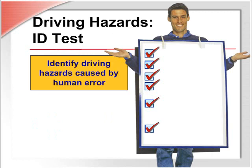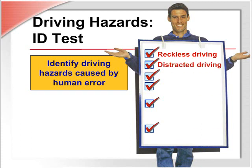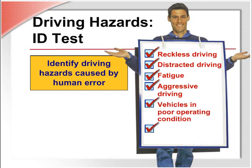How many driving hazards caused by human error can you identify in five seconds? Driving hazards caused by human error include reckless driving, distracted driving, fatigue, aggressive driving, failure to keep the vehicle in good operating condition, and driving under the influence of alcohol or drugs.